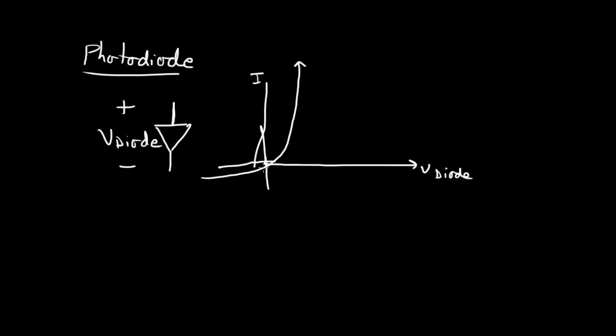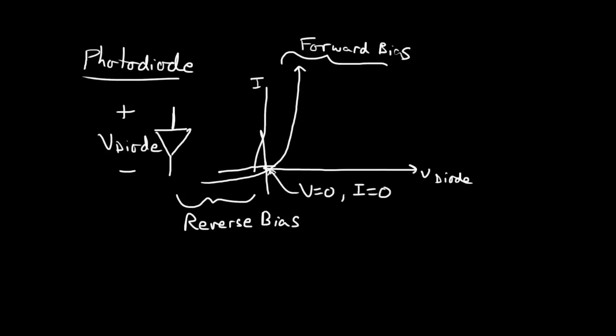What you have are three distinct regions of the diode. You have here where V diode is positive, you have forward bias. And here we have reverse bias. That's where we're going to operate our photodiode. And then you have this point where V equals zero and I equals zero.